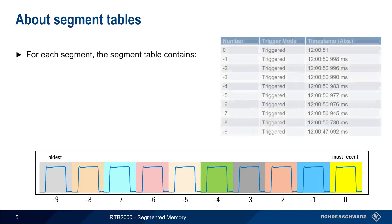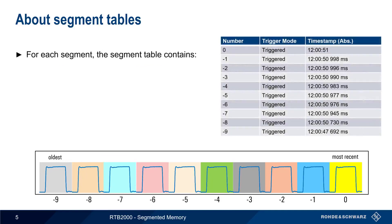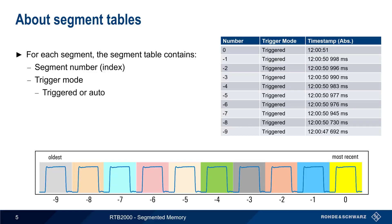A segment table is used to store information about each segment, specifically the segment number or index, the trigger mode — that is, whether the segment was captured on a trigger event or due to an auto-trigger — and that segment's timestamp, either as an absolute time or as a relative time. Note that for both segment number and relative timestamps, values are given as negative values, relative to the most recently acquired segment.